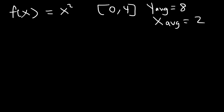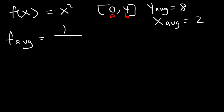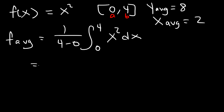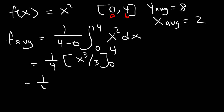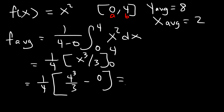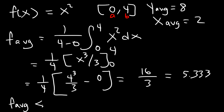Applying the formula: 1 over b minus a, with a equals 0 and b equals 4, gives 1 over 4. The integral from 0 to 4 of x squared dx has antiderivative x cubed over 3, evaluated from 0 to 4. Plugging in 4: 4 cubed over 3 minus 0. 4 cubed divided by 4 is 4 squared, which is 16. So we get 16 over 3, which as a decimal is about 5.33. The average value of the function is less than the average y value of 8.